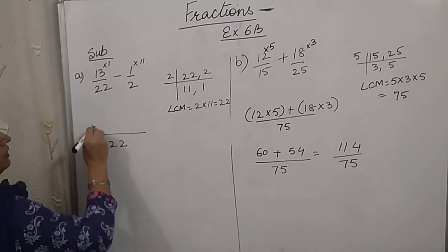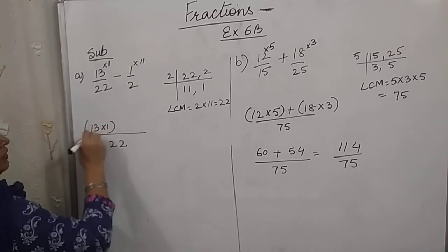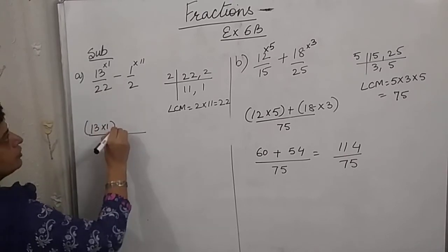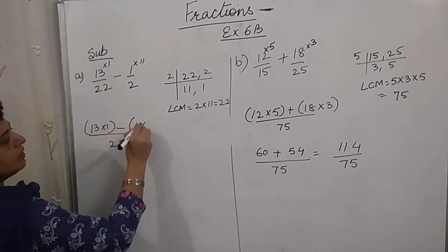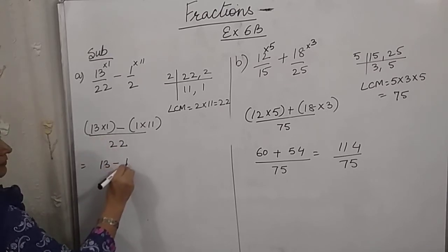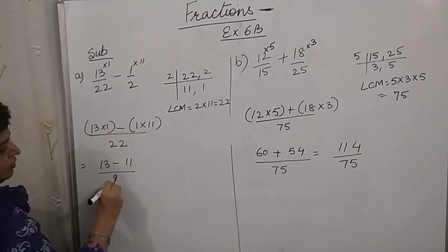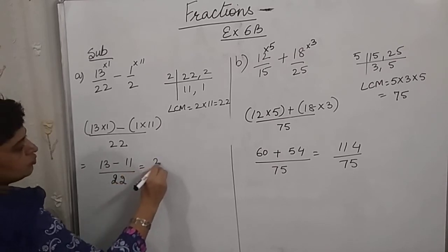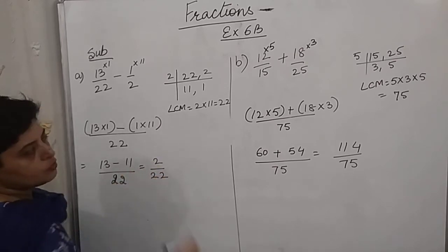So 13 into 1, in between there is sign of subtraction, and here it is 1 into 11. So we get 13 minus 11 upon 22, which gives us 2 by 22.